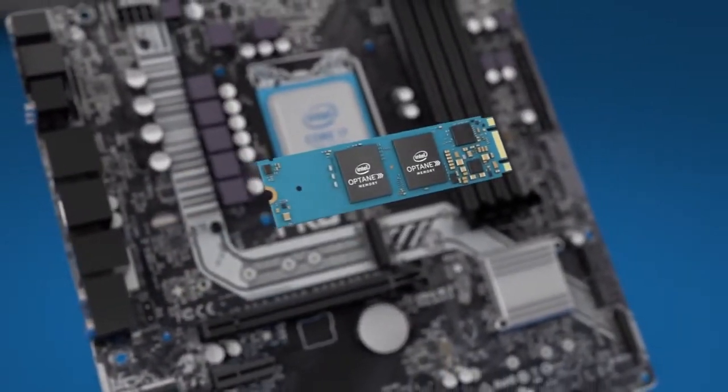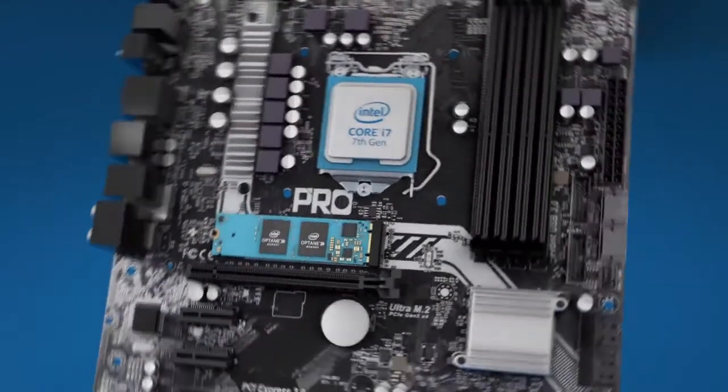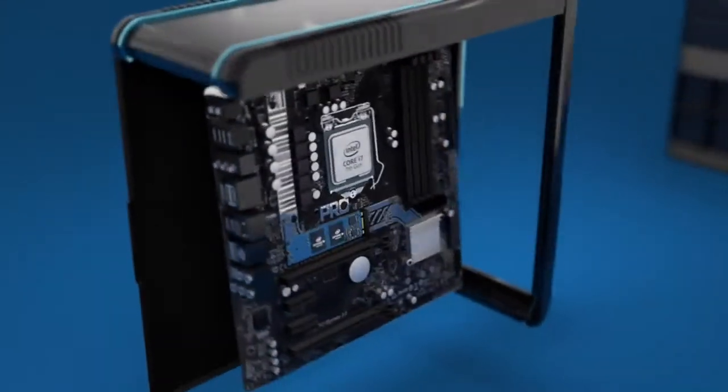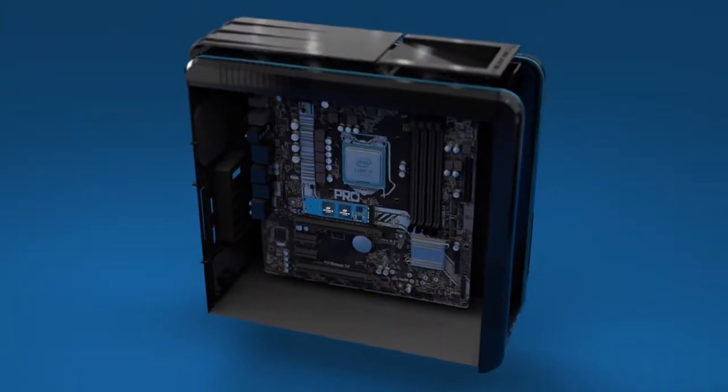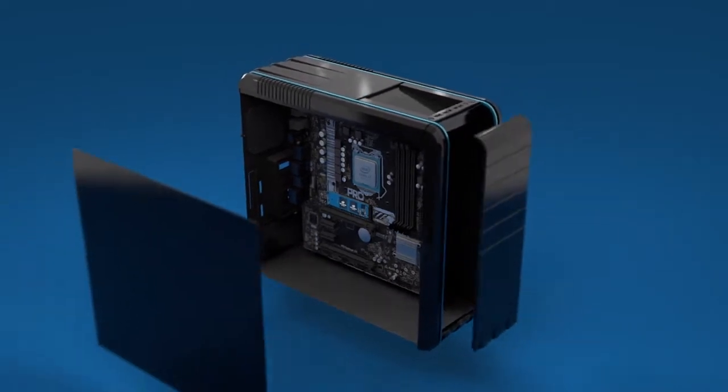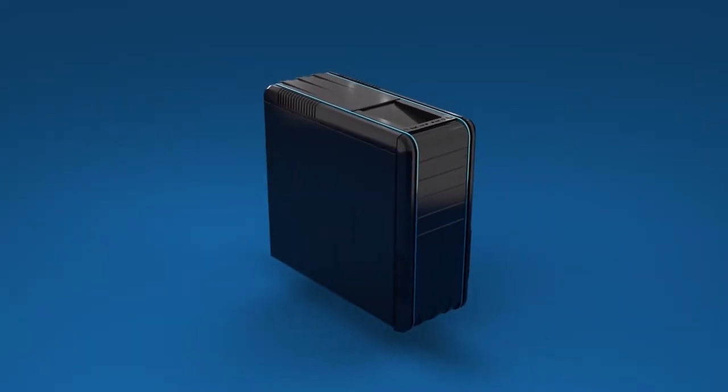How do you get Intel Optane memory? Install the Intel Optane memory module in an Intel Optane ready motherboard or system. Or, beginning this summer, purchase a complete system with Intel Optane memory already installed from a local retailer.